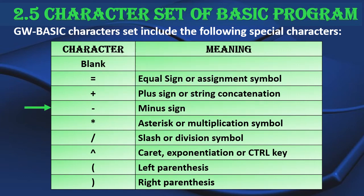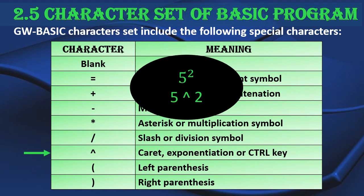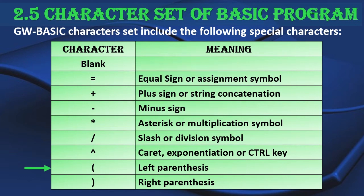The minus sign is used for subtraction. The asterisk is the multiplication symbol. The slash is used for division and returns the quotient. The caret is used for exponentiation — for example, in mathematics we write 5 raised to the power 2, but in computer science we write 5 caret 2 to represent the same. Left and right parentheses, which are familiar types of brackets, are also part of the character set.